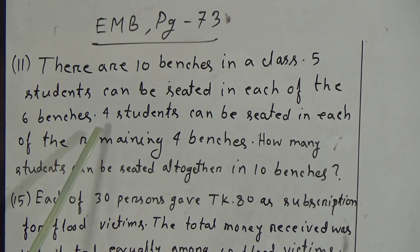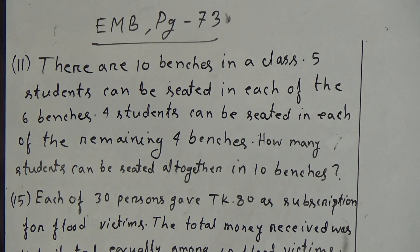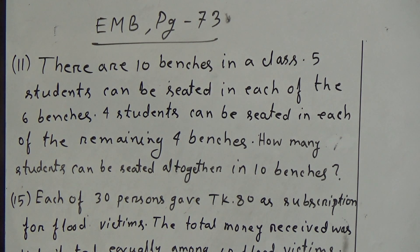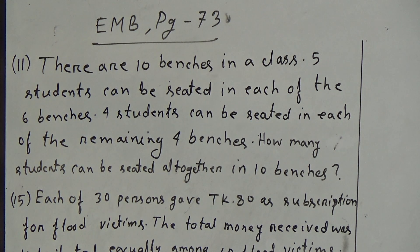And in case of the remaining 4 benches, 4 students can be seated in each bench. So in total 4 benches, 4×4 = 16 students can be seated. So in 10 benches, total number of students that can be seated will be 30 + 16 = 46. The answer will be 46.